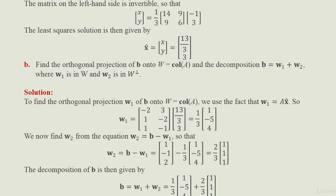We find w2 from w2 = b − w1, so w2 = b − w1 = (2/3) times [1; 1; 1]. The decomposition of b is then b = w1 + w2 = (1/3)[1; −5; 4] + (2/3)[1; 1; 1]. Thank you everyone.